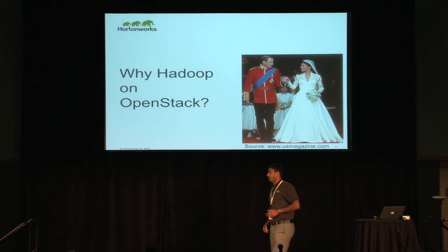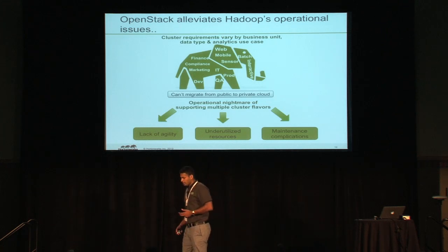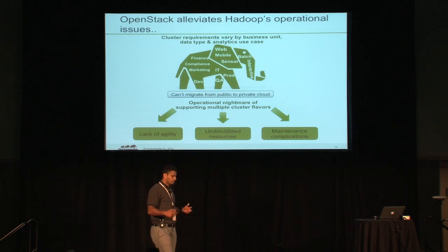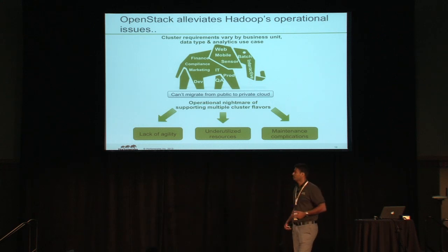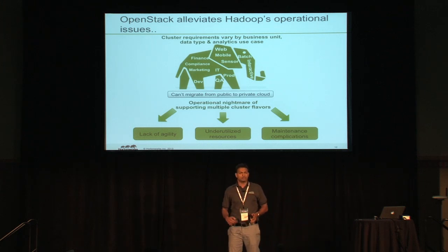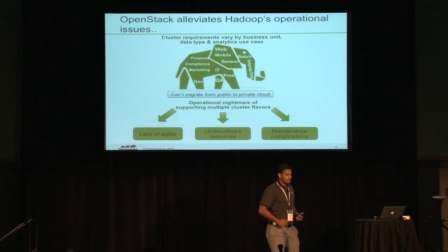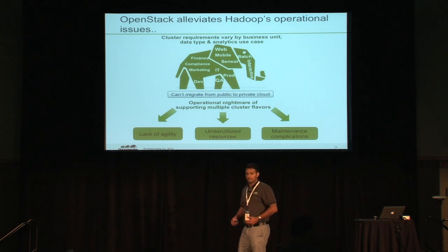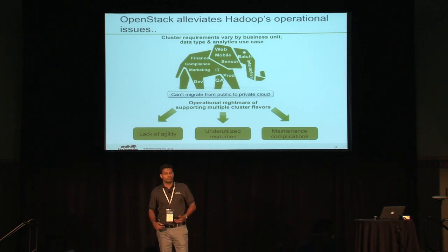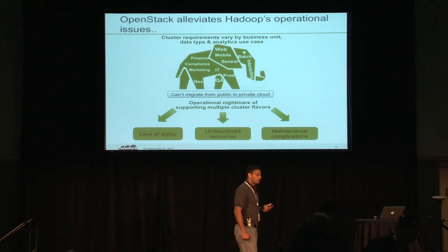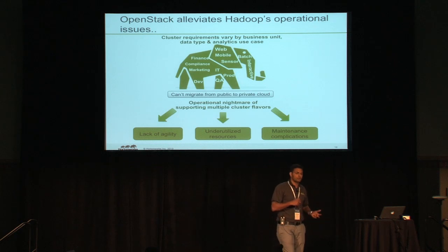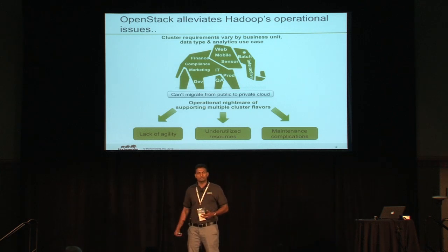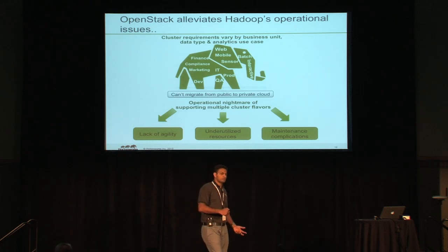As we work with customers, we find that as the big elephant settles down within a typical enterprise, there are a lot of operational challenges around Hadoop. Different departments — finance, marketing, compliance — all want their own version of Hadoop with different capacity and privacy requirements. Combined with different data sources like web and mobile, you have different clusters for different departments, plus different clusters to support different use cases: batch and interactive. And as an enterprise goes through their Hadoop adoption journey, they find they need to run clusters for QA, production, testing, and performance validation. All these cluster types must be supported through the whole lifecycle.